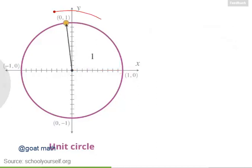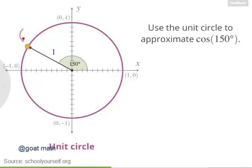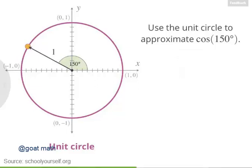Now it's time to venture beyond 90 degrees. Here's an angle of 150 degrees counterclockwise from the positive x-axis. Use the x or y coordinates of this point on the unit circle to approximate the cosine of 150 degrees. The cosine of 150 degrees is the x-coordinate of this point, and because it's left of the y-axis, the cosine of 150 degrees is negative — it looks like it's between negative 0.8 and negative 0.9. Meanwhile, the sine of 150 degrees is positive, because this point has a positive y-coordinate.